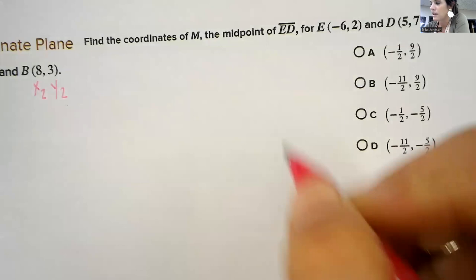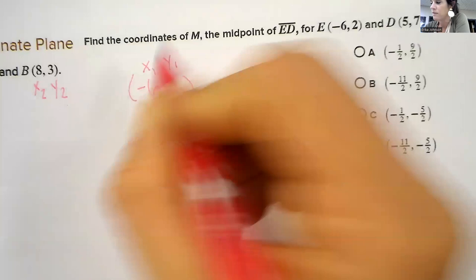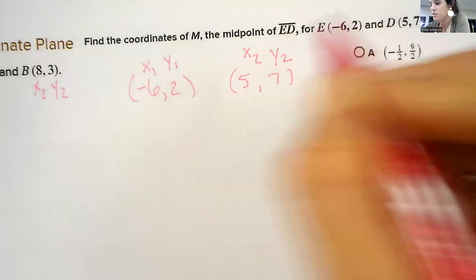All right. Another one. Pause it. See if you can figure this one out. I'm going to let negative 6, 2 be x1 and y1. And then 5, 7 is going to be x2 and y2.